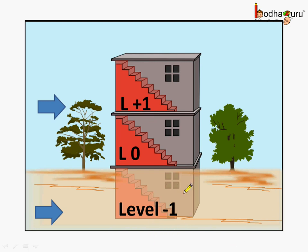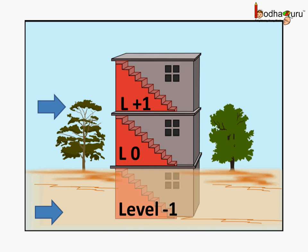Here, we introduced a negative number, which has a minus sign added to it. As we go up from the ground floor and floors get added, we call them level plus 1, plus 2, plus 3 and so on. And in case the floors are built below the ground level, we name them as level minus 1, below it would be minus 2 and so on. So, here we introduce the concept of negative numbers.